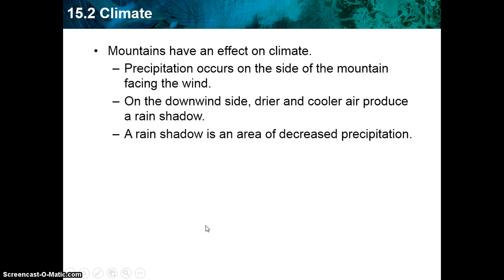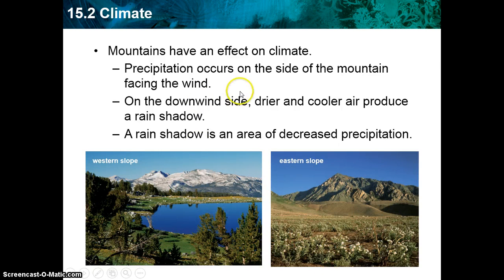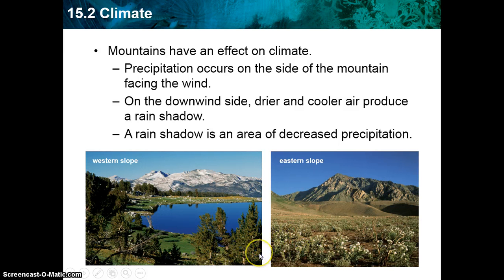Mountains also have an effect on climate. Precipitation occurs on the side of the mountain facing the wind — so on the western slope — while the downwind eastern slope receives drier, cooler air, producing a rain shadow. A rain shadow is an area of decreased precipitation. It's clear from the two pictures here which side receives more precipitation: the western slope facing the wind versus the eastern slope receiving fewer amounts.